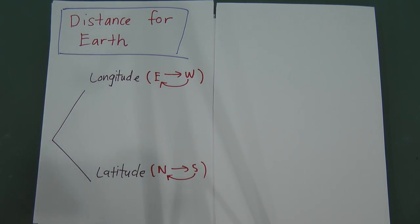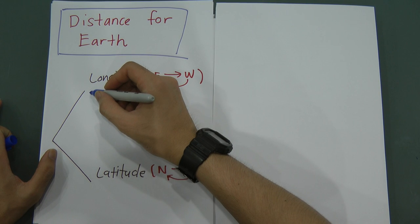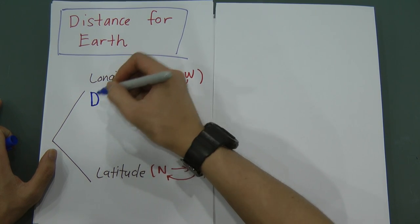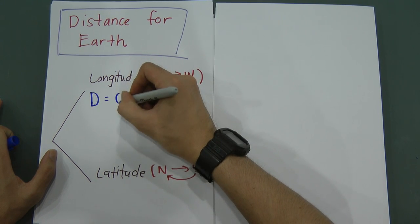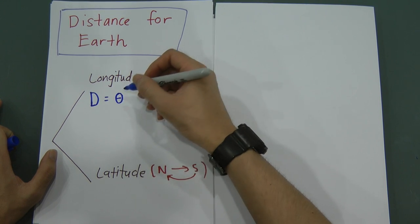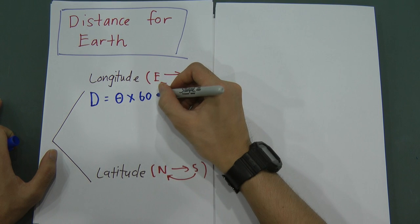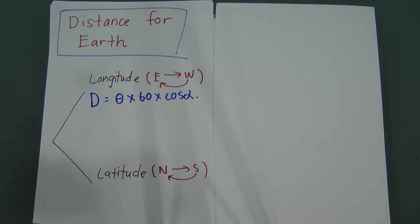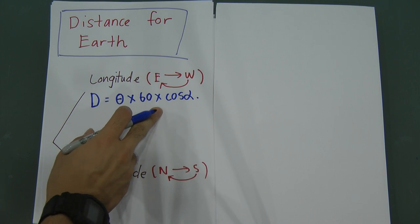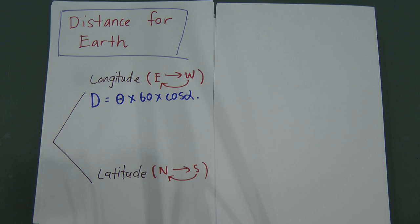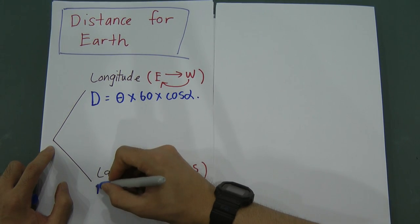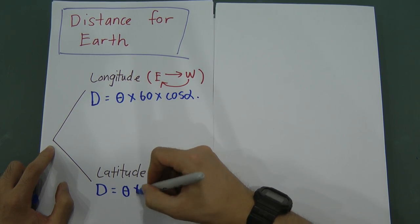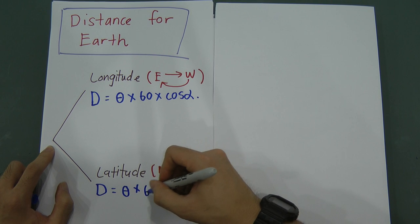Now I will explain two formulas here. First, if you want to find the distance for longitude, the formula will be: D (distance) equals angle in degrees multiplied by 60, then multiplied by cos alpha. For latitude, the distance equals angle multiplied by 60 only.